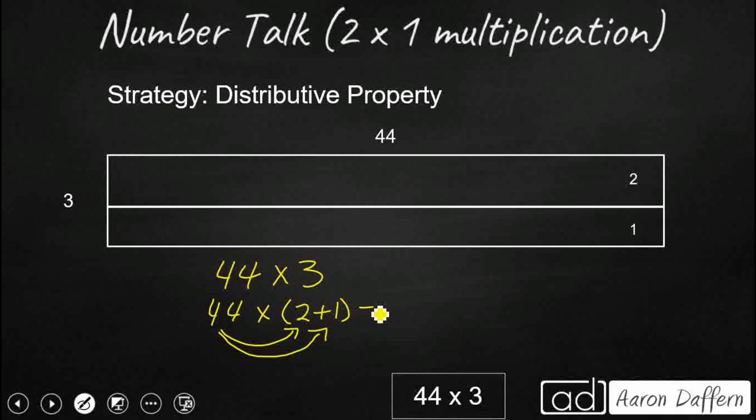Now we're going to distribute that 44, multiply it by the 2 and the 1. So it's 44 times 2, that's an easy double, and then 44 times 1, that's easy, that's just 44. So you see how that helps us out. We get 88 and 44, and that's 120 and 12, so you still get your same answer of 132. That's two different ways we can use the distributive property.